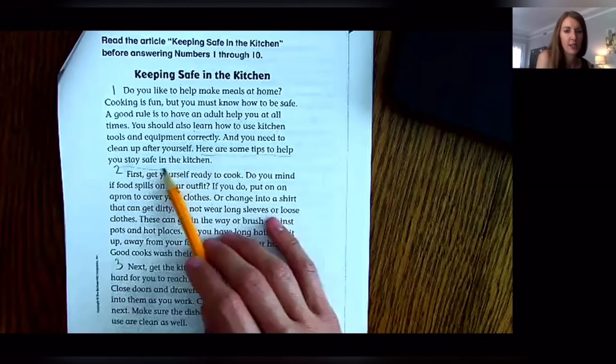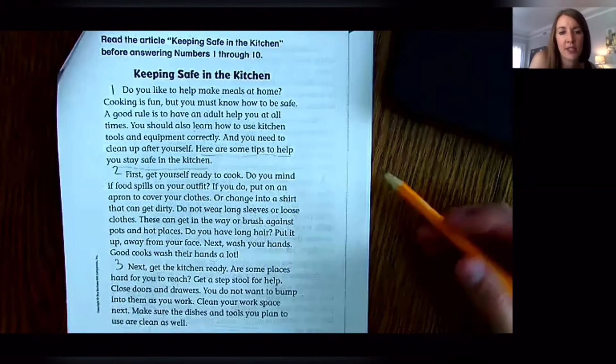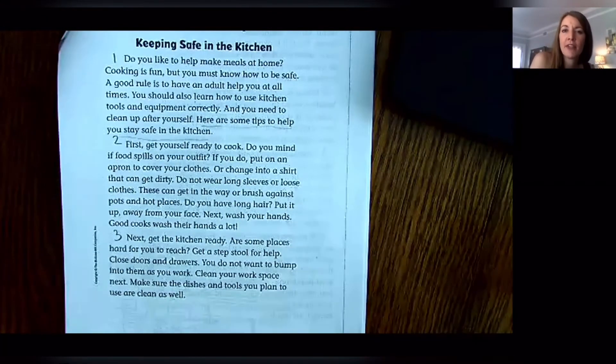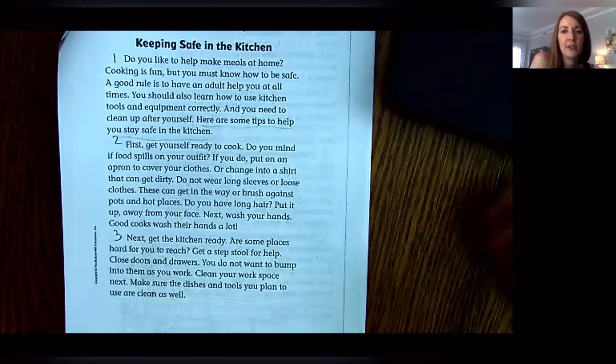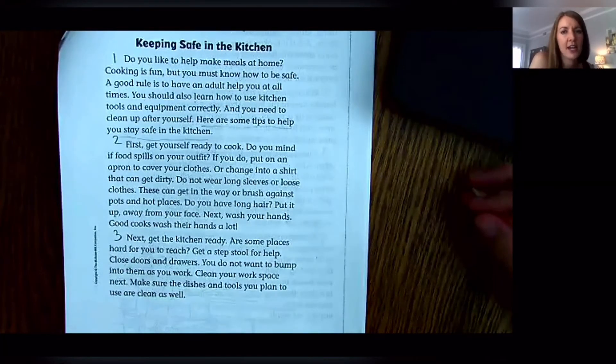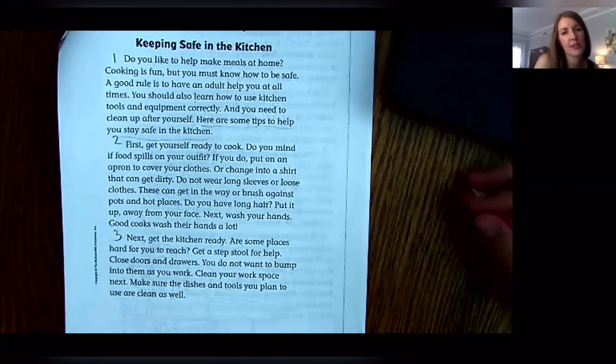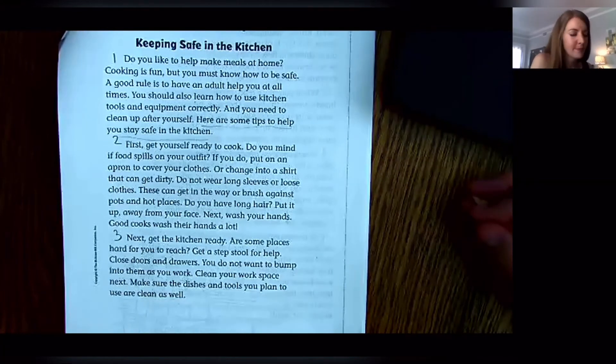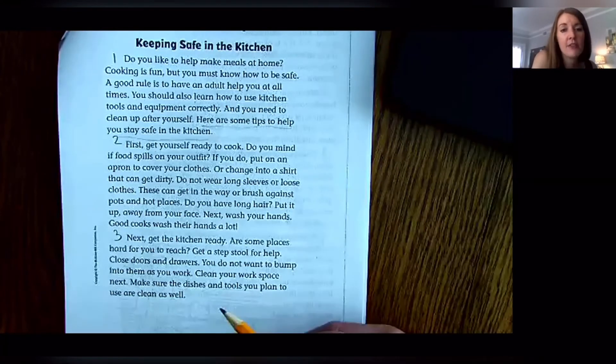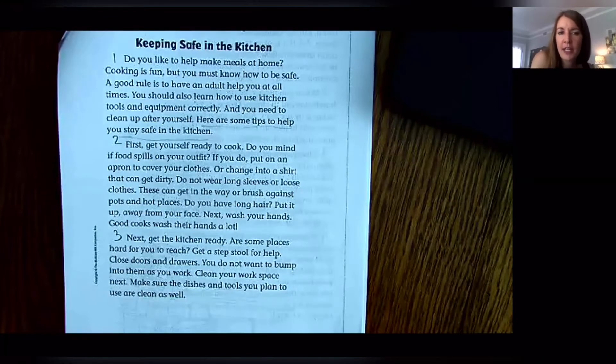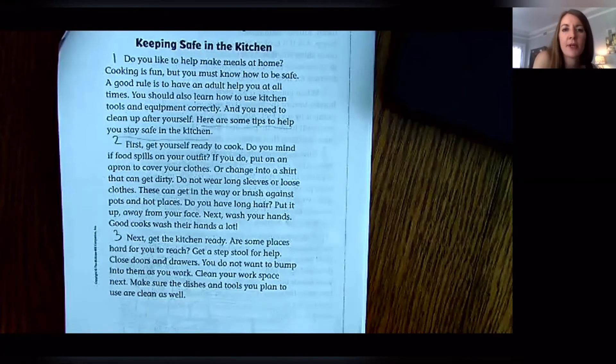So already this is my prediction about what they're going to tell us. This whole article's purpose is to teach us some safety tips because remember, every good reader as you're reading, you're continually thinking about your text, you're asking questions, you're changing your predictions. Number two: First you get yourself ready to cook. Do you mind if food spills on your outfit? If you do, put on an apron to cover your clothes or change into a shirt that can get dirty.